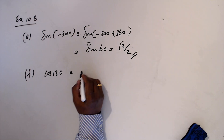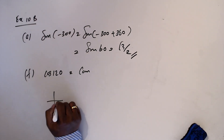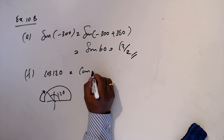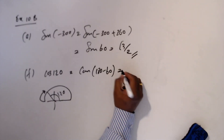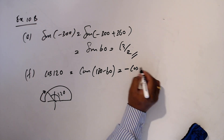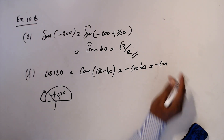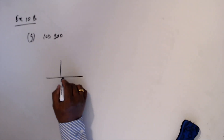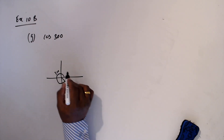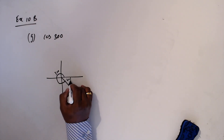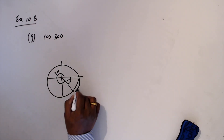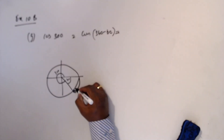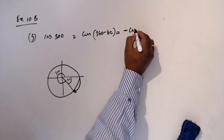F: cos 120. Cos 120 is in the second quadrant. I can write this as 180 minus 60. In the second quadrant, cos is negative. For G: cos 300, I write this as 360 minus 60. In the fourth quadrant, cos is positive.